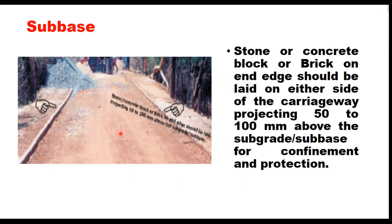After preparing the subbase, it is mandatory to lay a layer of stone, concrete block, or brick on end edge (i.e., vertical bricks) on either side of the carriageway, projecting 50 to 100 mm above the subbase for confinement and protection of the cell-filled concrete pavement. Because joint spacing is very small, concrete thickness is only 50 to 100 mm, and joint arrangement is unique, load transfer in CFC pavements is not through slab action. They are not rigid materials — they behave like semi-flexible or semi-rigid material, and therefore design is based on elastic layer theory.